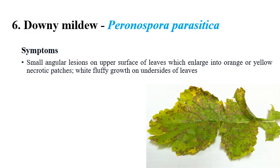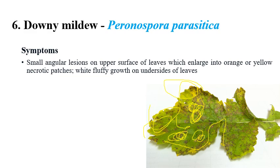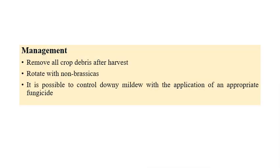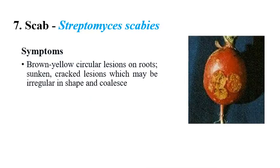Downy mildew is caused by Peronospora parasitica. The name indicates the main symptom — white downy growth can be seen, and orange to yellow color patches can also be seen on leaves, giving a rusty-like appearance, though it is not true rust. Yellowing and fluffy growth on leaves can be observed. For management: remove all crop debris, practice crop rotation with non-brassica crops, and apply appropriate fungicides.